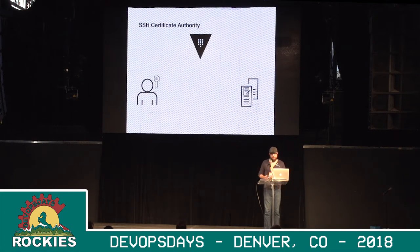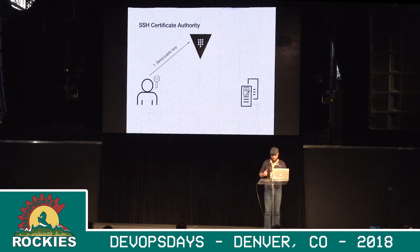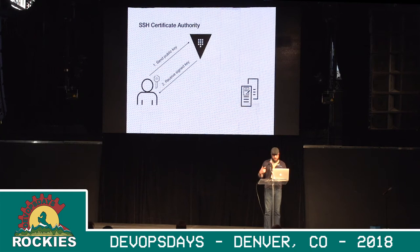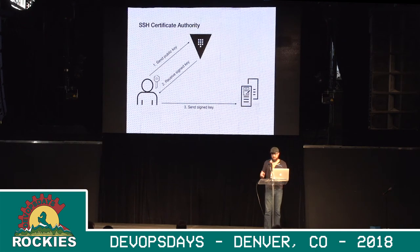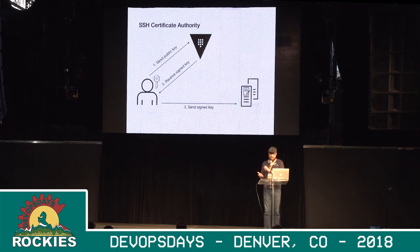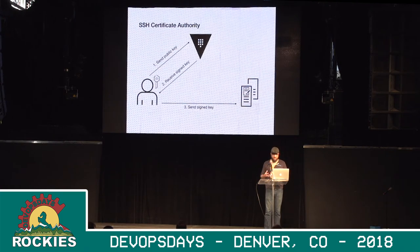The next piece is certificate authority. You can use Vault as a way to sign your SSH certificates. You send it your public key, and it will give you a signed key back based on the policies associated with that. We take that signed key and SSH over to the instance. That SSH instance has the certificate authority that was created from Vault already pushed to it, so it will broker that connection and verify the signature of that — without actually making a new request to Vault — because you've already done that and pushed the certificate authority to the instance.